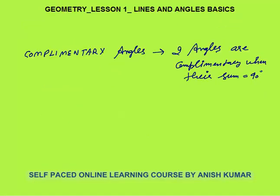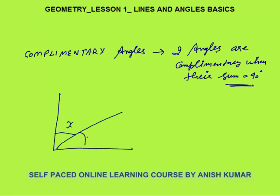Next is complementary angles. Any two angles whose sum is 90 degrees are complementary. Like this angle X and this angle Y — the complete angle is 90 degrees. So X and Y are complementary angles.